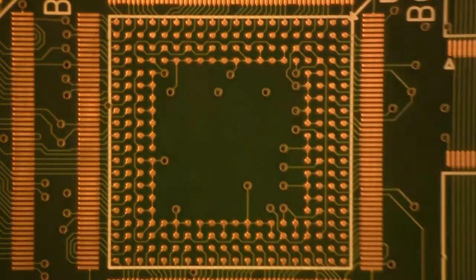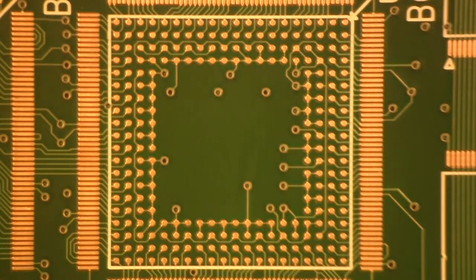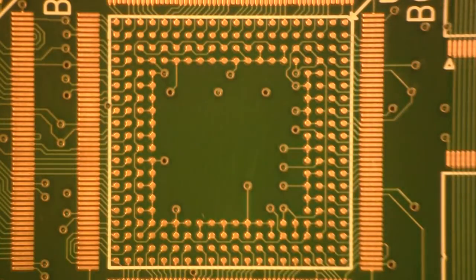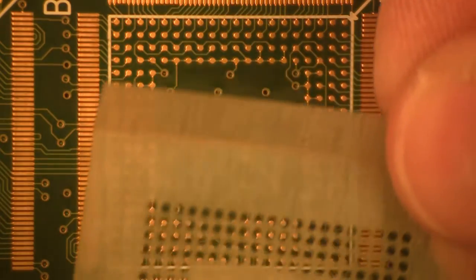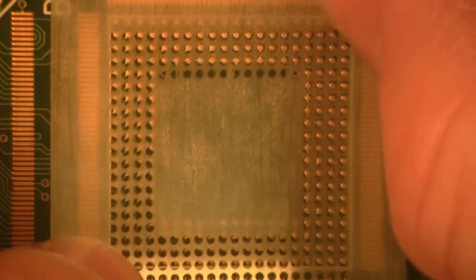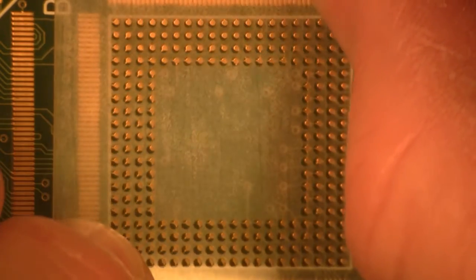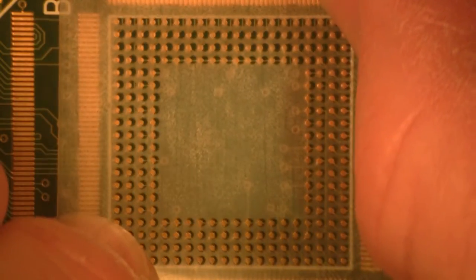We're going to grab our stencil again and then we're going to peel it off just like so. The next thing you're going to do is align it properly so all the holes and everything are aligned.